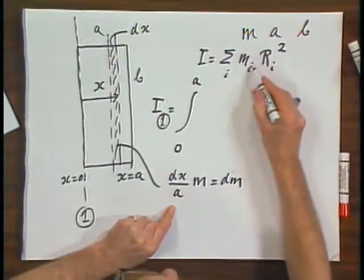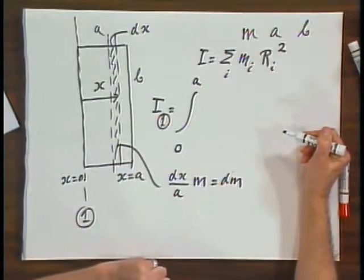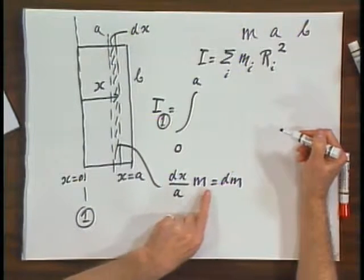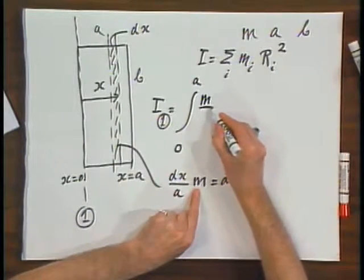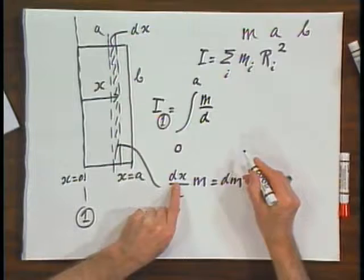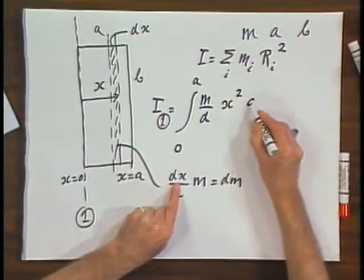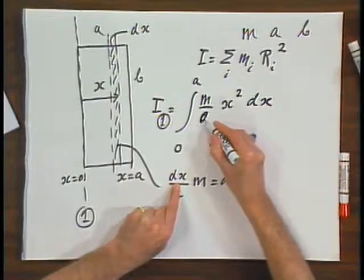So if now I want an integral to take the whole sheet into account, I get dM, which is M over A times dx, but I also have to multiply by x squared, so I will put the x squared here, and I have the dx there.